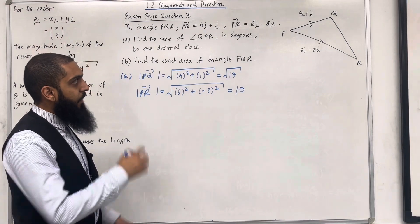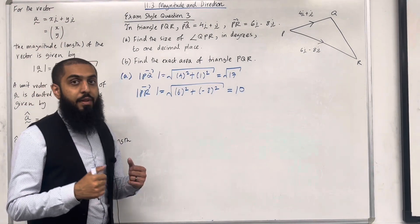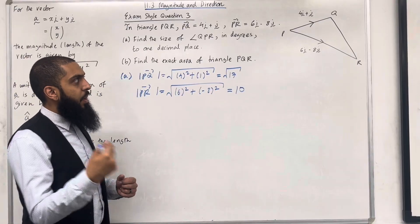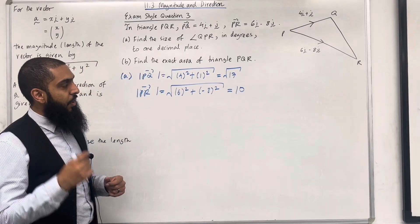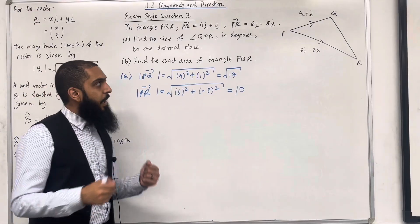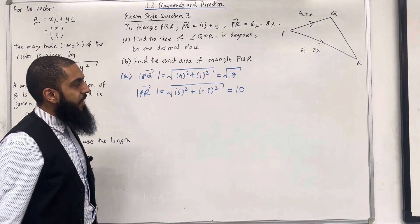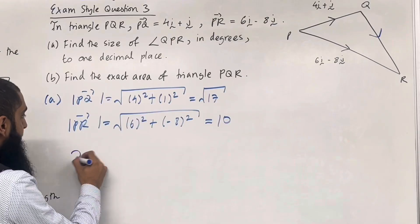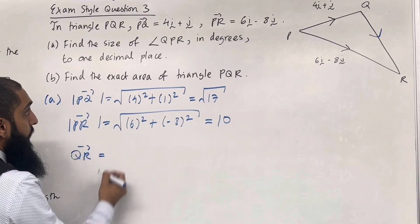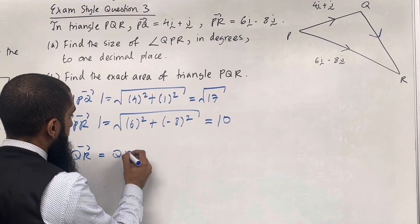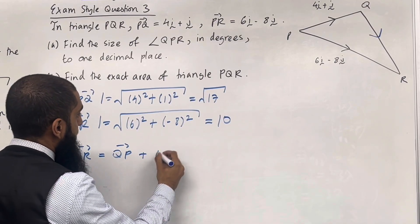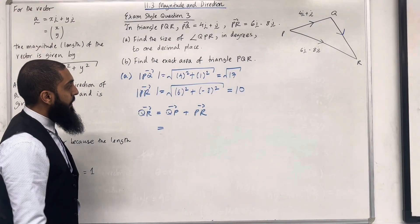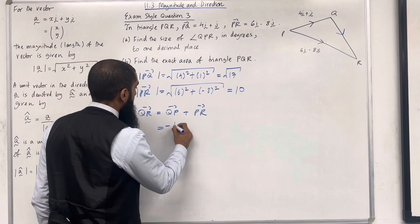To find the length of QR, I first need vector QR. Vector QR = QP + PR. The vector QP = −PQ, so we are going in the opposite direction.